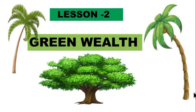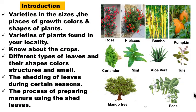Children, today we are going to start our second lesson. The name is Green Wealth. In this lesson we are going to learn varieties in the sizes of plants, place of growth, colors, shapes of plants and varieties of plants found in our locality, know about the crops, leaves and their shapes, colors, structures and smell, shedding of leaves during certain seasons, and the process of preparing manure using the shed leaves.